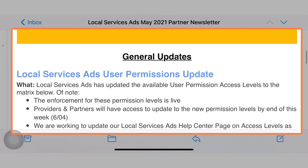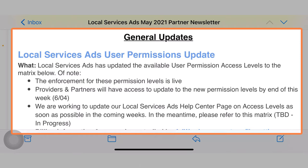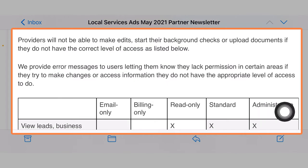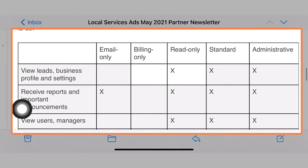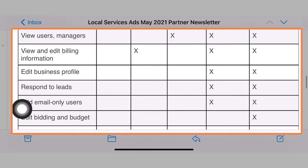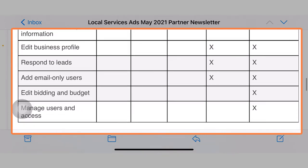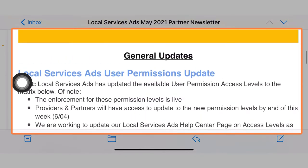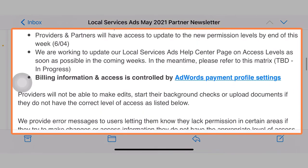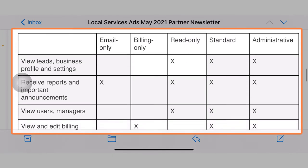You can see the local service ads permission updates have been changed here. What this really has to do with is the enforcement of these permissions — basically it's live. They just want people to know. Before it was just administrative, read-only, and billing. Now there's standard and email-only. It shows you exactly what level of authority people will have at each one of these permission levels. This is just a new update to give more options.